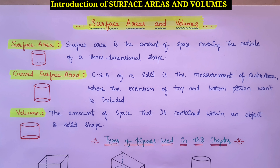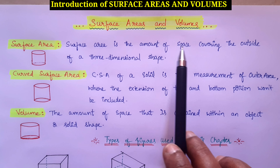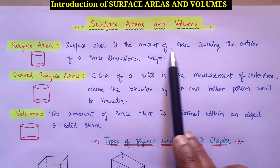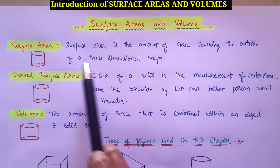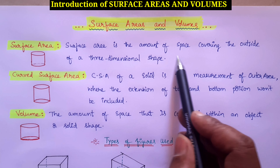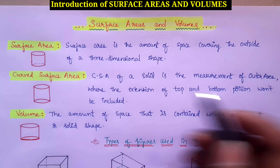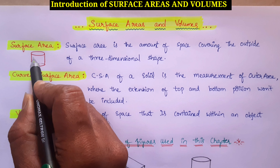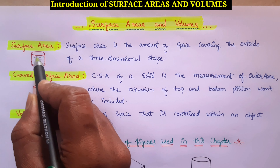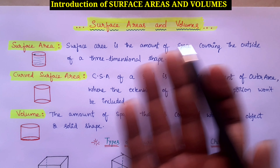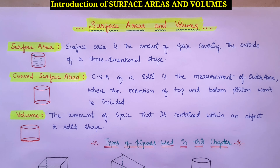First, what do you mean by surface area? Surface area is the amount of space covering the outside of a 3-dimensional shape. For example, if you consider a shape, whatever it covers — on the top, side, bottom, everything — that is the surface area.